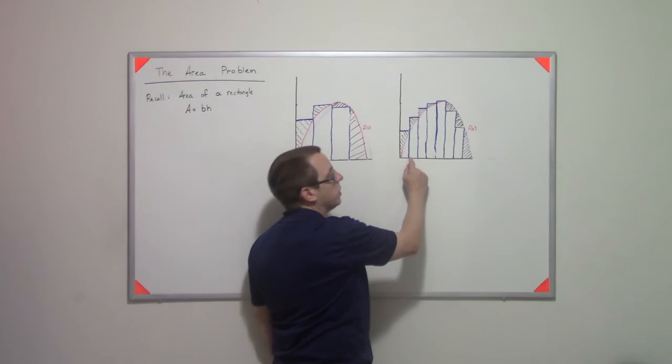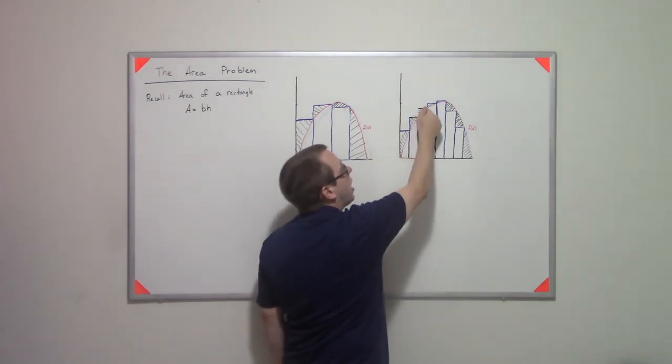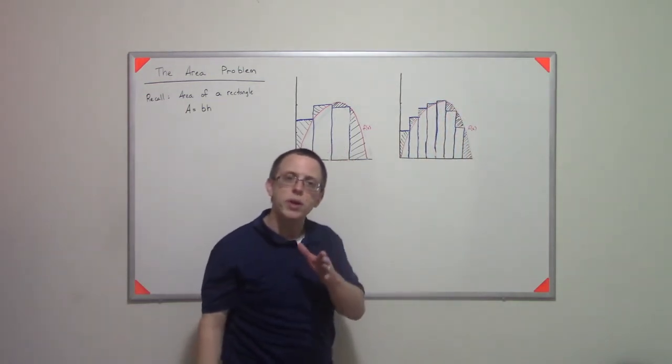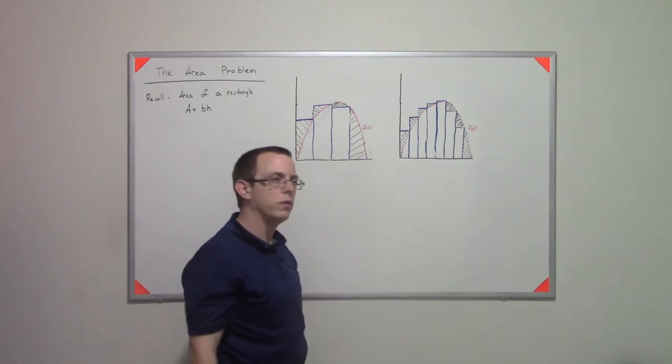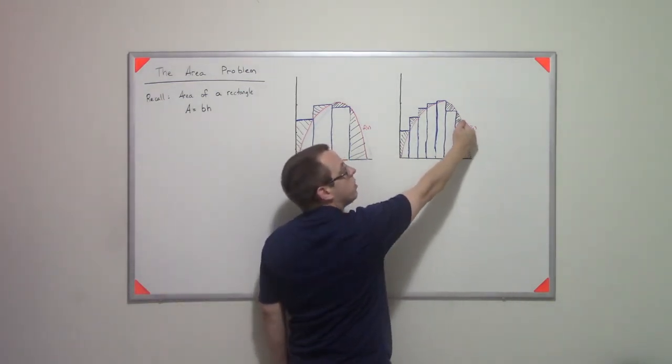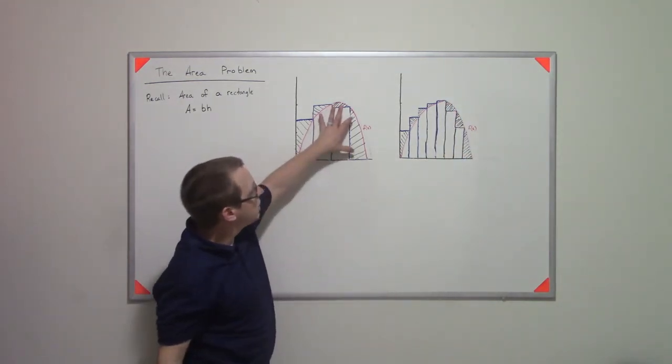So I end up with the same process, but they all have width one, and their heights are still the points on the curve at that x value. So I have some underestimation here, here, and here. But notice that each of those little strips is less than this giant chunk.